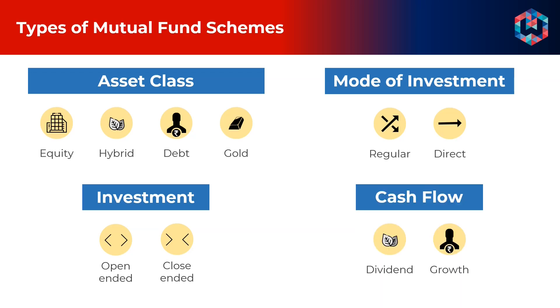Some mutual fund schemes offer a dividend option where dividends are paid out of realized gains. This creates a cash flow for the investor, though these dividends are not guaranteed and cannot be regular. In the growth option, profits are accumulated and allowed to compound.